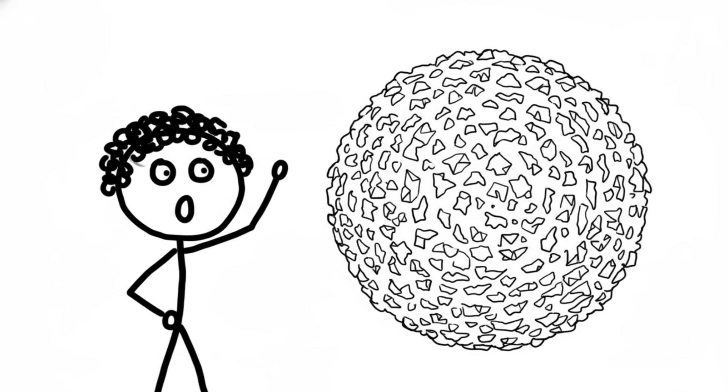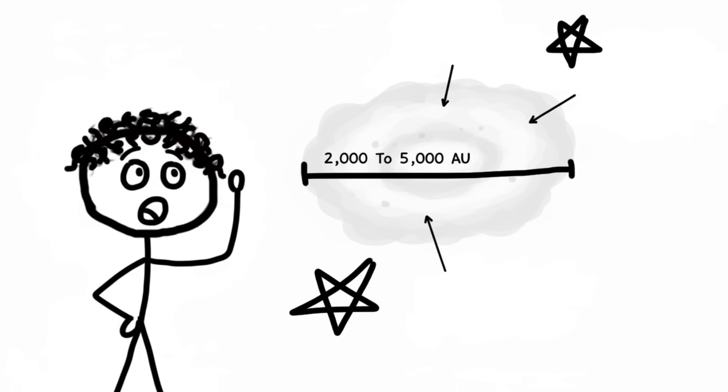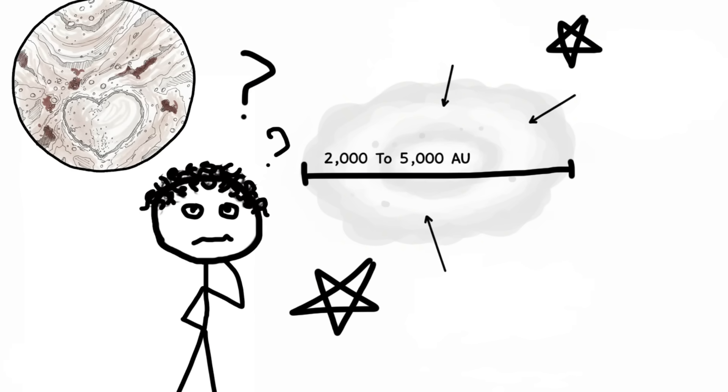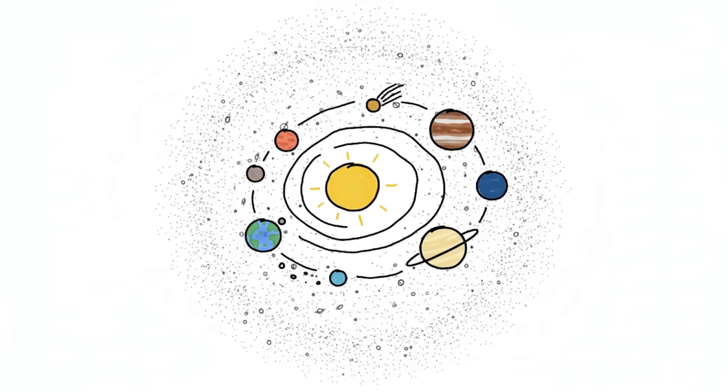Starting roughly 2,000 to 5,000 astronomical units out and extending perhaps halfway to the next star—that's hundreds of times farther out than Pluto—it's essentially the cosmic junkyard of our solar system's formation. A trillion icy bodies just floating in a dark, cold, empty graveyard.